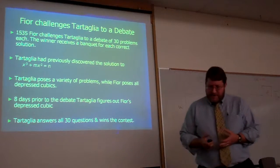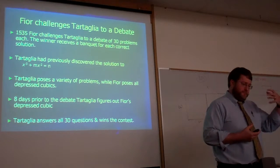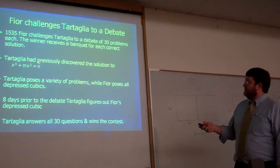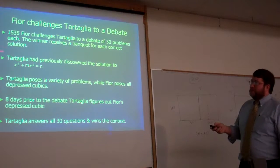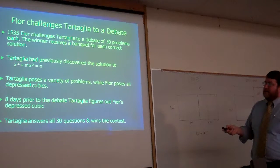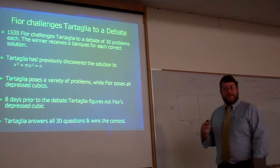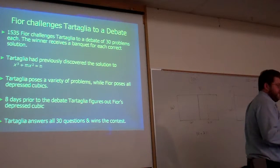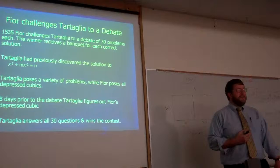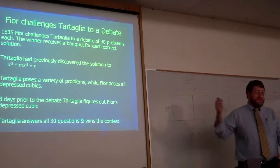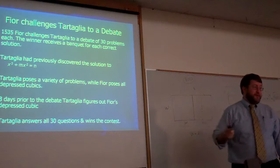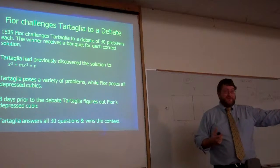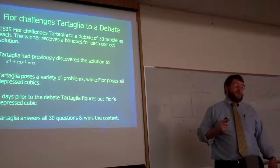Tartaglia gets wind that Fiore has knowledge of a particular type of equation. Tartaglia had discovered a solution to a different cubic — x cubed, x squared, and a constant — but not the depressed cubic that was going to be asked of him. So he works feverishly for the month preparing, and he figures it out. This puts Tartaglia in good company: three and a half thousand years after the Babylonians solved the quadratic, he figures out the depressed cubic in a month because the pressure was on.